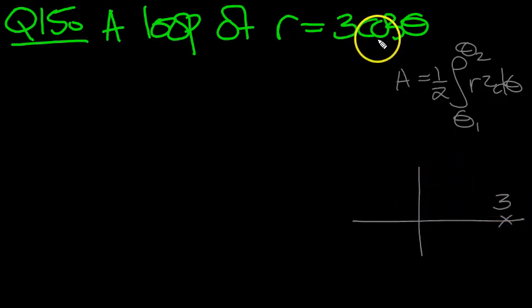It's going to come around to 0 when theta is pi over 2. So it's going to come around and go to 0. And that's pi over 2. And this will be half the loop.